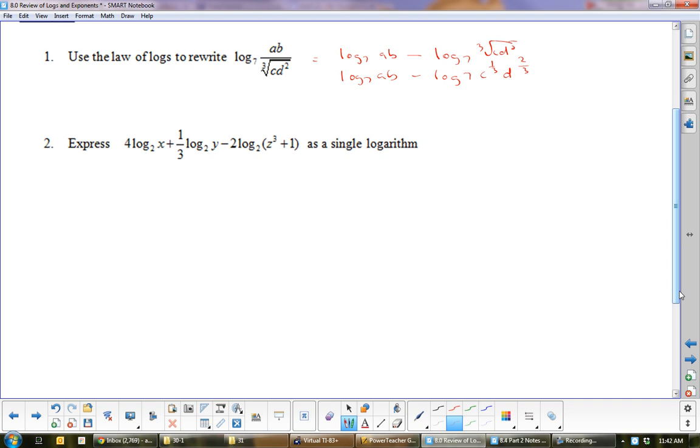And now we see we can use the product law to split this A and B up, and we can use the product law to split this up. So where the problem comes is how people do that. So this one would be just log 7 A plus log 7 B minus the bracket. And that is very important, because you would get the wrong answer if not. So that would be log 7 C to the 1 third plus log 7 D to the 2 thirds.